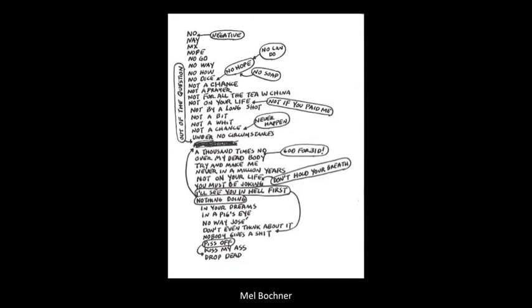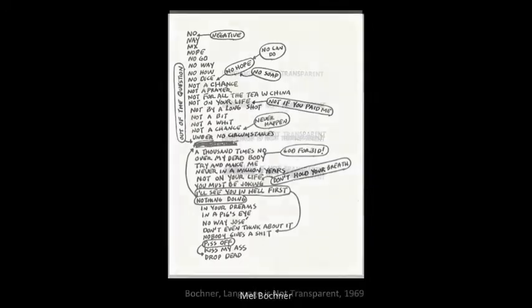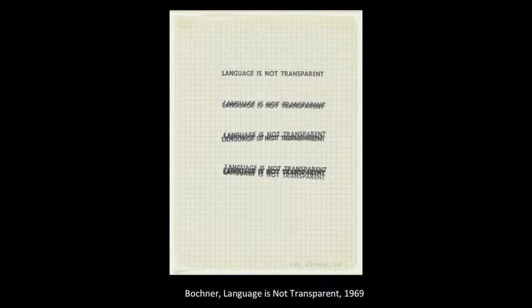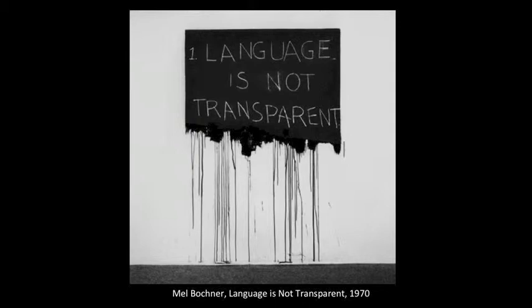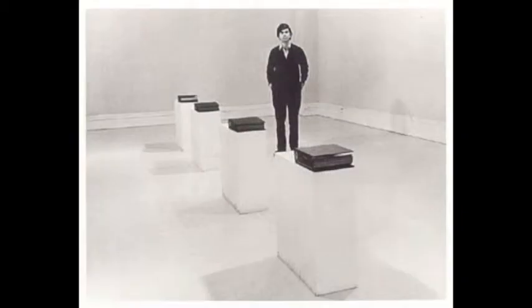Mel Bochner started out as an art historian. For an exhibition he was asked to curate at the School of Visual Arts in New York, he invited 100 friends to submit a drawing. He xeroxed these drawings so that they were all the same size and placed them in binders on sculpture pedestals in the gallery. The exhibition was titled Working Drawings and Other Visible Things on Paper Not Necessarily Meant to Be Viewed as Art. This is seen by some as the first conceptual art exhibition. One artist, Donald Judd, had given Bochner as his drawing a fabricator's bill for a sculpture Judd had had made. In Judd's mind, this was just as much a part of the art as the actual object.